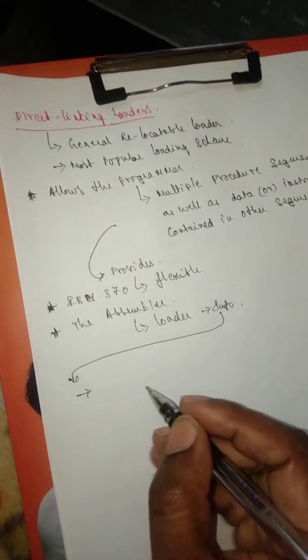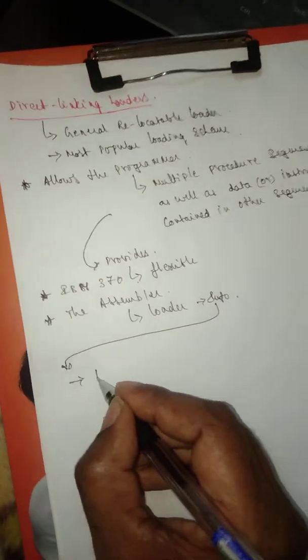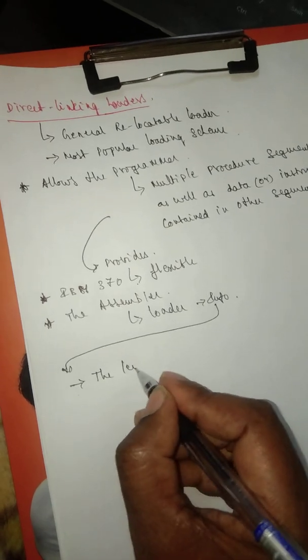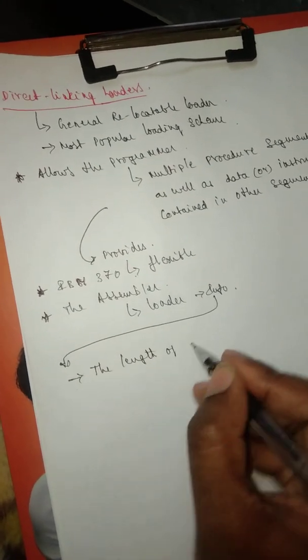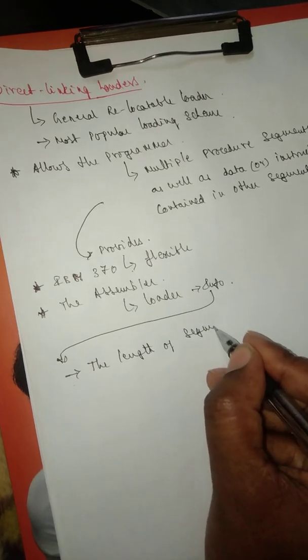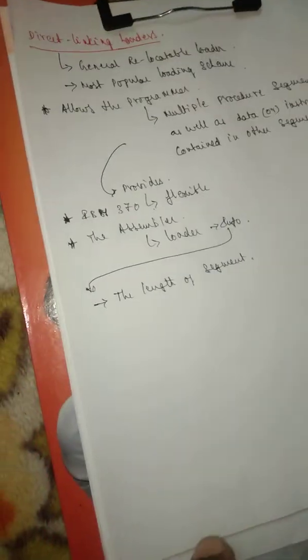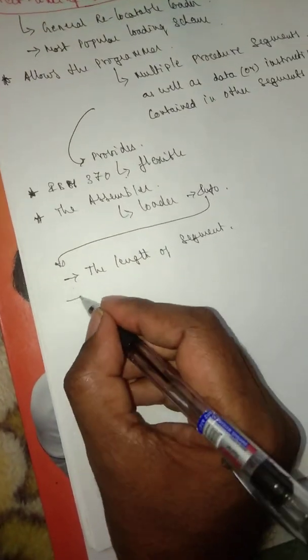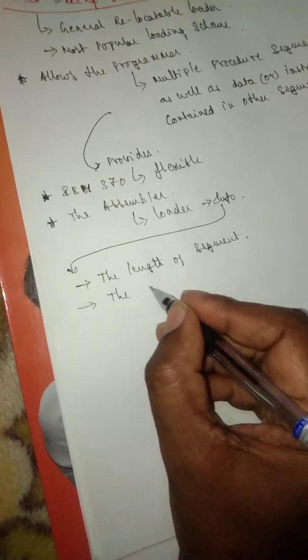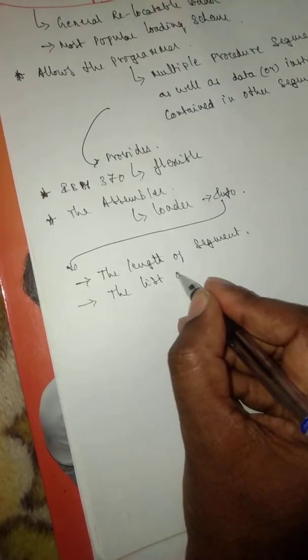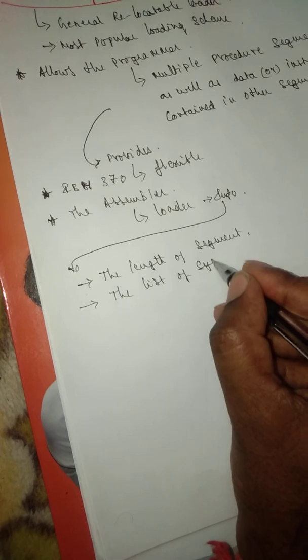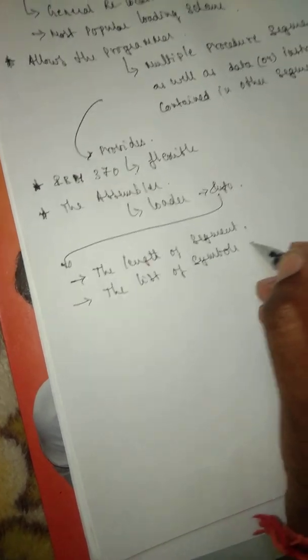The first one is symbols: the length of each segment. And then it has to give the list of symbols in the segment.